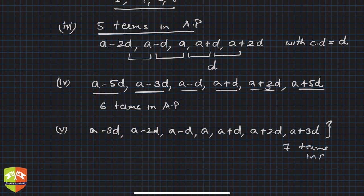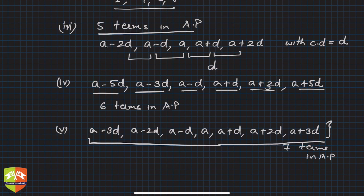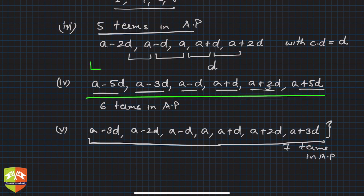The reason we write terms in this manner is that when problems give you the sum of terms of an AP, you can eliminate one variable — d — by adding all of them. Adding all the terms eliminates d, and you get a directly. So if you know the sum of three, four, five, six, or seven terms, you can find a easily. That is why we express them in this fashion, and it will become even clearer when you solve problems subsequently.